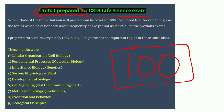The 9 units I prepared include cell biology, molecular biology, genetics, plant physiology, developmental biology, cell signaling — and I have skipped the immunology parts.